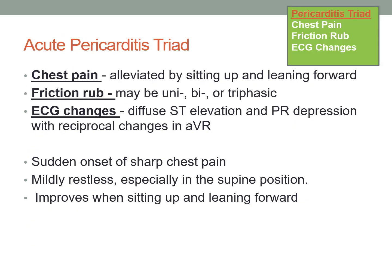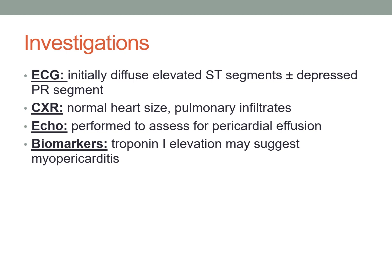Acute pericarditis is diagnosed based on the presenting complaint, physical examination, and ECG changes. If someone comes with a complaint of sudden onset of sharp chest pain, the person might feel restless while in the supine position, but it can get better while sitting up and leaning forward. On physical examination, a friction rub can be noticed, whereas ECG shows ST segment elevation and PR depression.